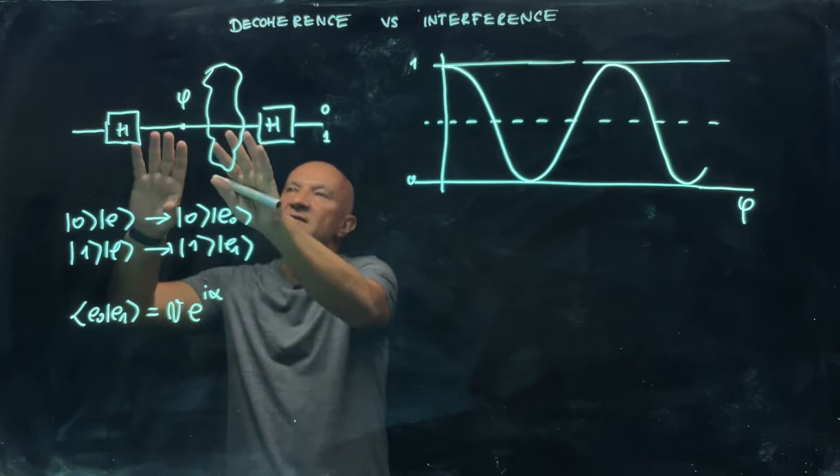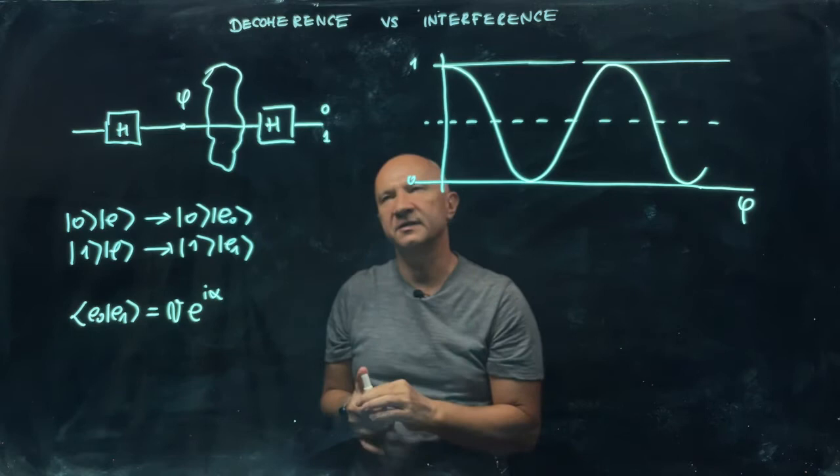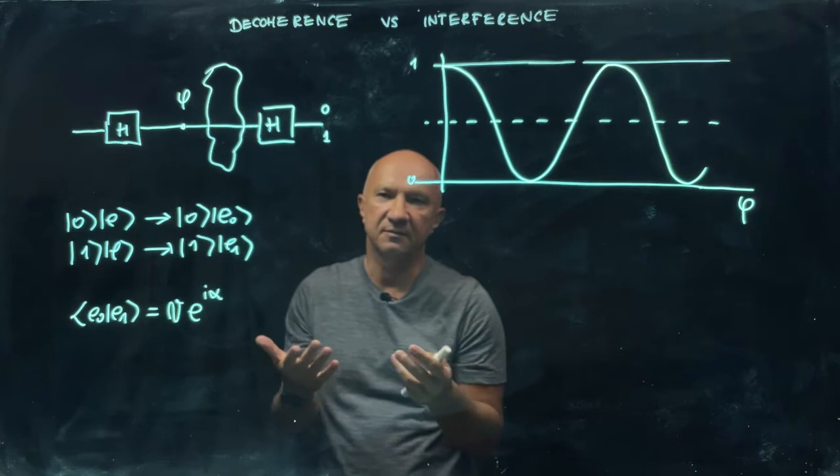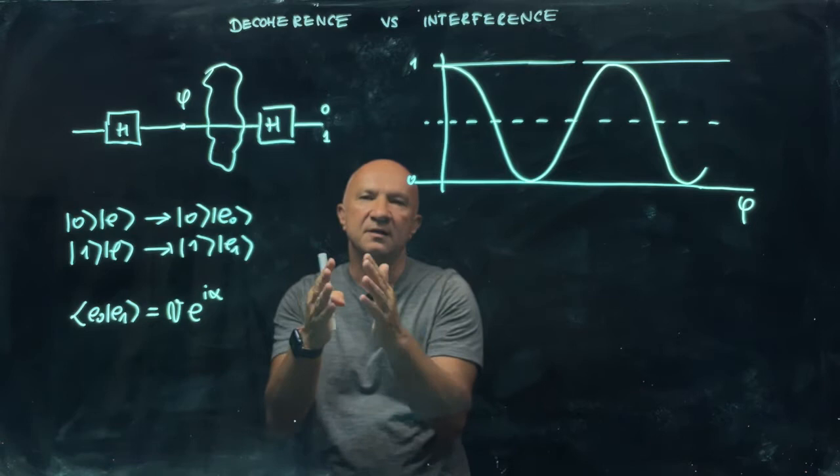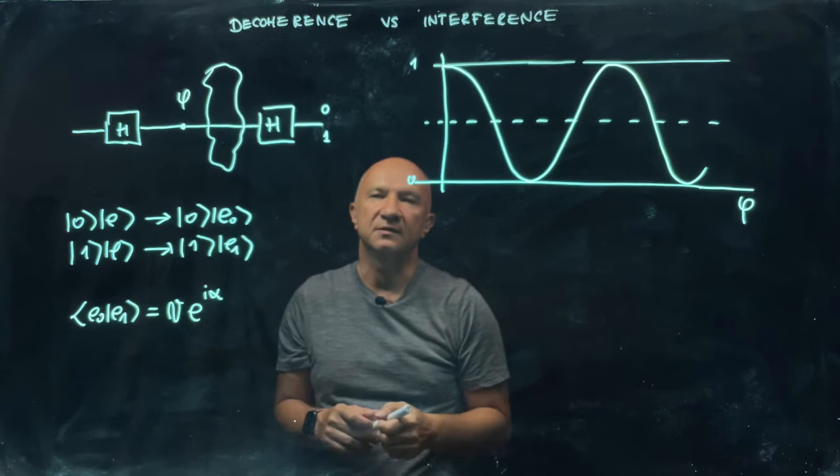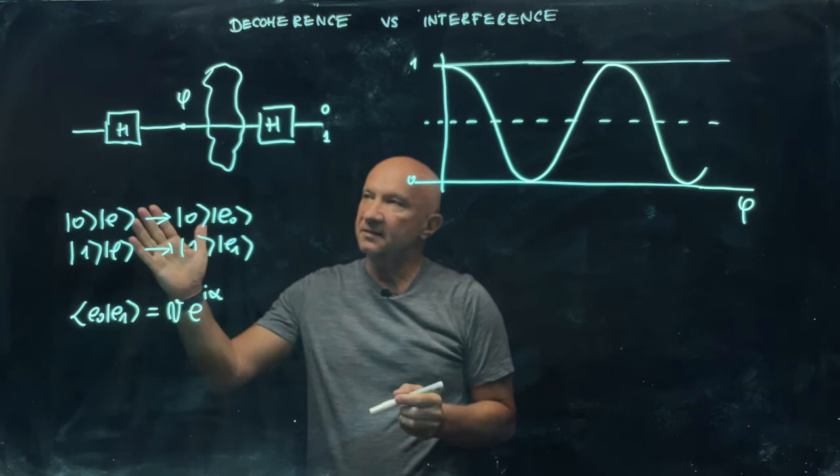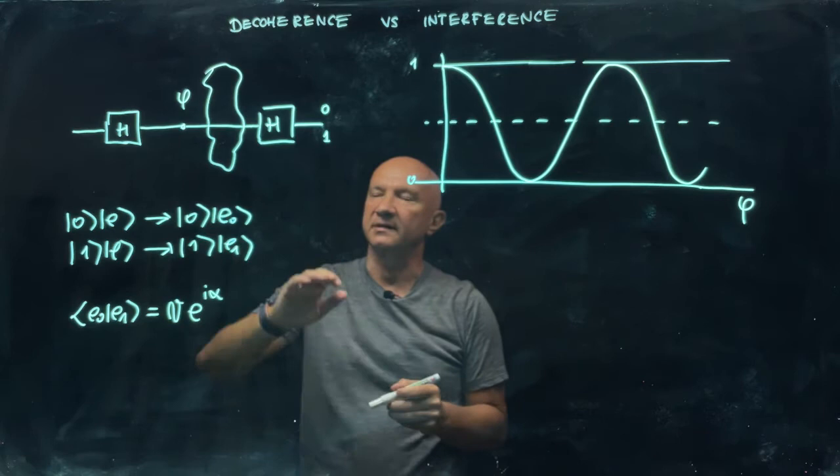So we know that in the absence of the environment, in the absence of decoherence, we have a nice clean quantum interference of a single qubit. And when we measure the output in the computational basis, we get either zero or one. And the probability of getting zero or one oscillates with phi. So it should be a deja vu experience for you. You've seen this before. So here is a plot of the probability that you see zero at the output. It oscillates between one and zero.